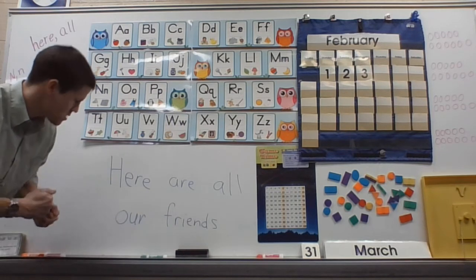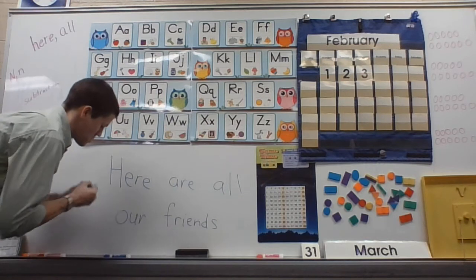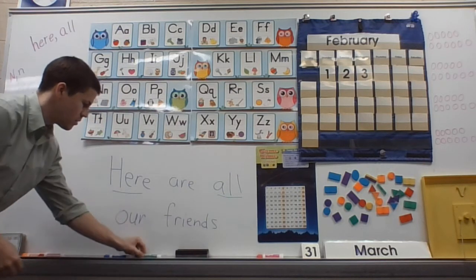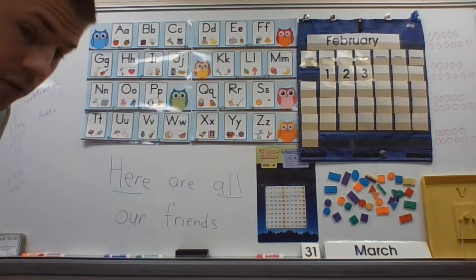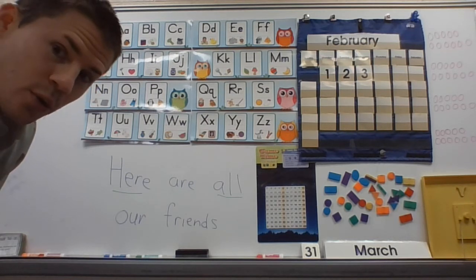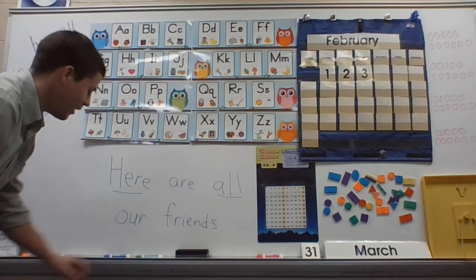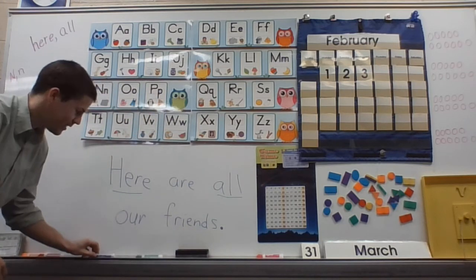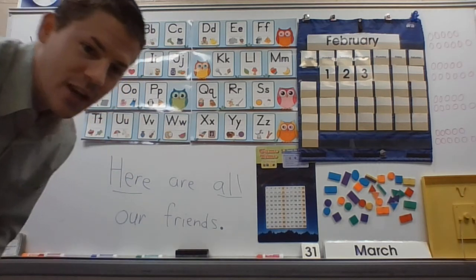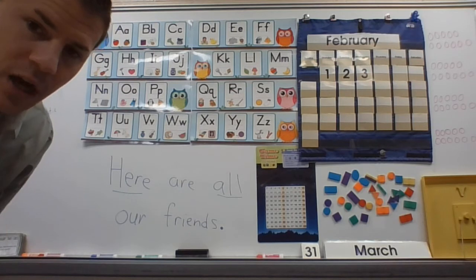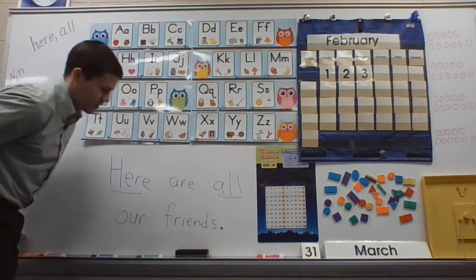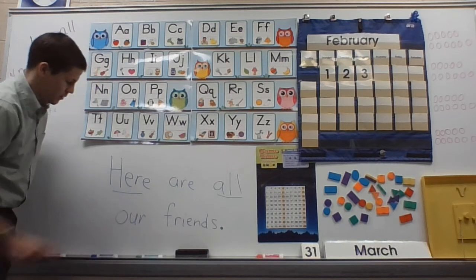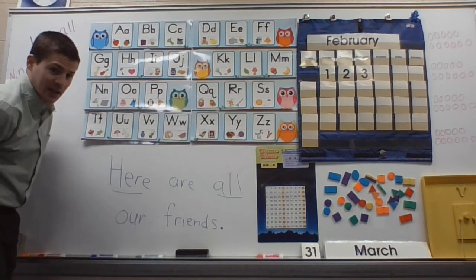Here are all our friends. All right, you better write that. I'm going to underline our sight words. Here. All. Here are all our friends. You're right. I completely forgot my period. Here are all my friends. Now, I made my period a little bit bigger this time, but you just have to make a dot. All right, did you get that written? Five words. You've got finger spaces. You've got a period. Uppercase capital letter to start.